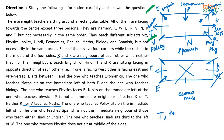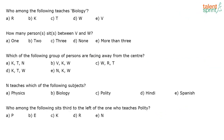So there are three people facing outwards: T, K, and W. Everyone else faces inward. This is the final seating arrangement.